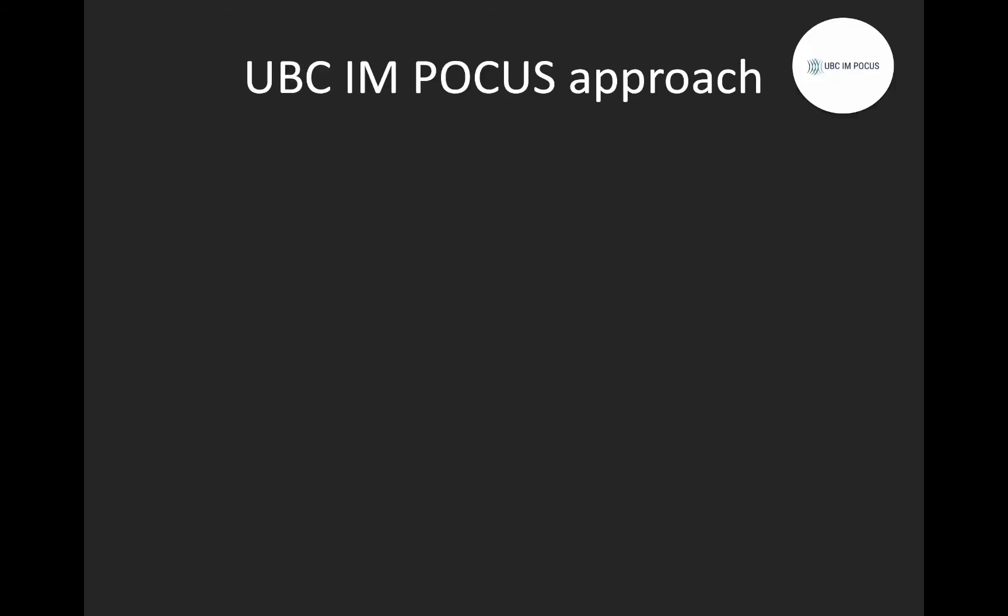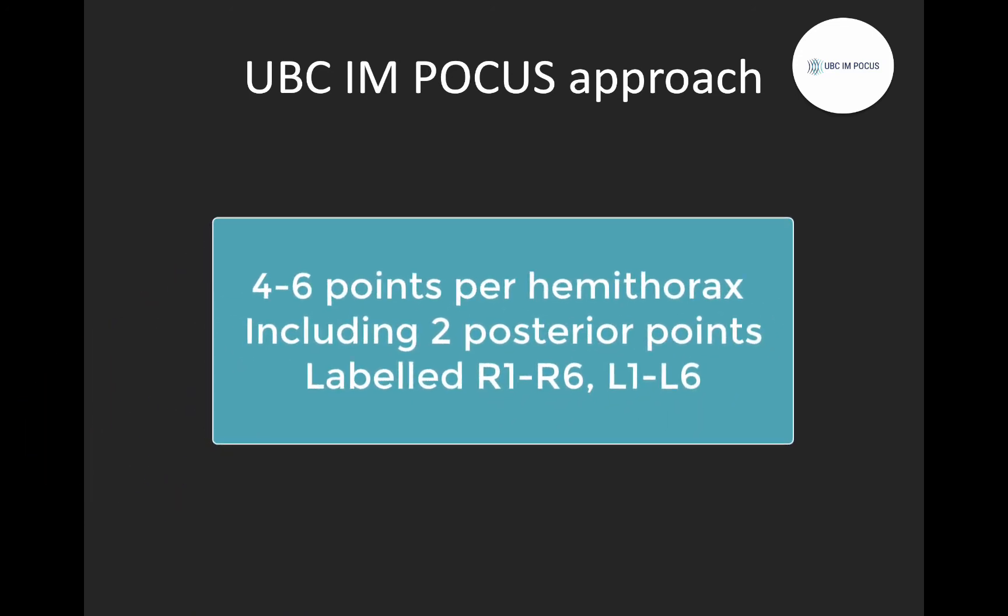Here at UBC IM POCUS, we favor a protocol involving scanning between 4 and 6 points per hemithorax, depending on the patient's ability to roll over or sit up to allow scanning of the posterior lung. There is no particular superiority of these exact points over others, as long as you're scanning a representative portion of the lung. The biggest reason to follow a single specific protocol within an institution is so that you can easily label, document, and communicate your findings.